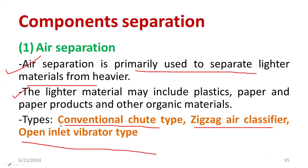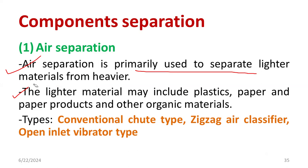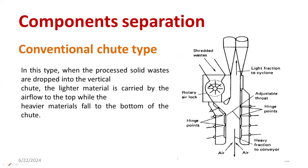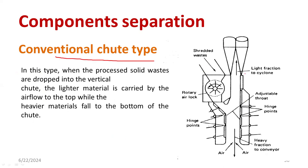We are going to discuss the sub-methods: the conventional chute method, zigzag air classifier, and ultimately the open inlet vibrator type. How about the working of conventional chute type? Everybody can observe there is a simple schematic diagram of conventional chute type. We have components such as the rotary air lock.